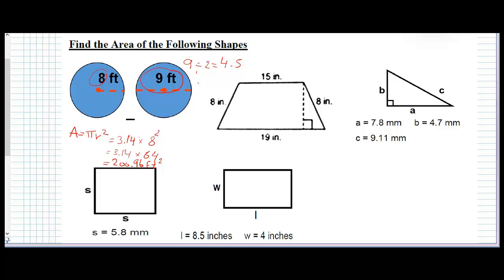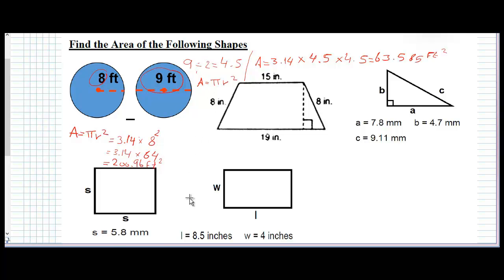Now let's apply our rule. Area of circle equals pi r squared. Here r is the radius, which is 4.5. So area equals 3.14 multiplied by 4.5 squared. 4.5 squared means 4.5 multiplied by itself two times.